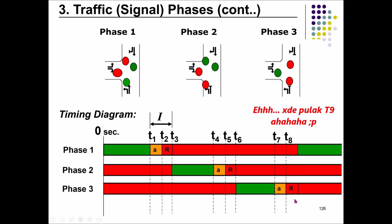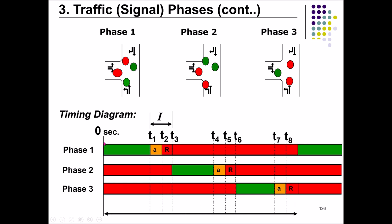From the beginning of the green indicator of phase one to the end of the all-red period of the last phase (phase three in this example) is what we call one complete cycle time, C naught. If there are two phases, the cycle ends at the all-red period of phase two. So one complete cycle time spans from the start of green for phase one to the end of the last all-red period.